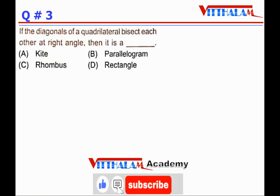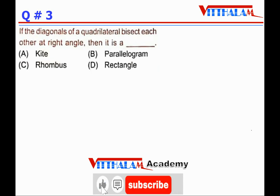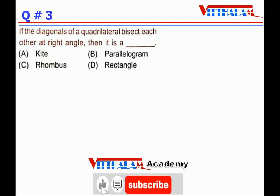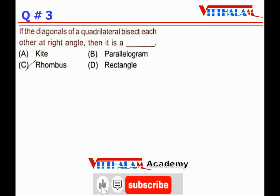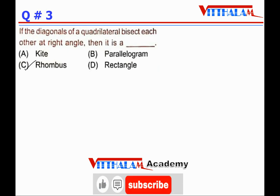If the diagonals of a quadrilateral bisect each other at right angles, then it is a rhombus (option C). It could also be a square, but square is not listed as an option.